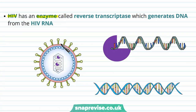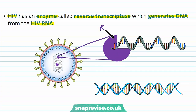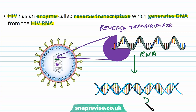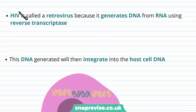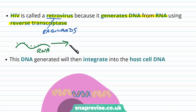HIV also contains an enzyme inside the particle called reverse transcriptase. Its function is to generate DNA from the HIV's RNA. Because of this, HIV and some other viruses are described as retroviruses — they generate DNA from RNA using reverse transcriptase. The prefix 'retro' means going backwards: usually transcription means making RNA from DNA, but here we go in the reverse direction, hence reverse transcriptase.